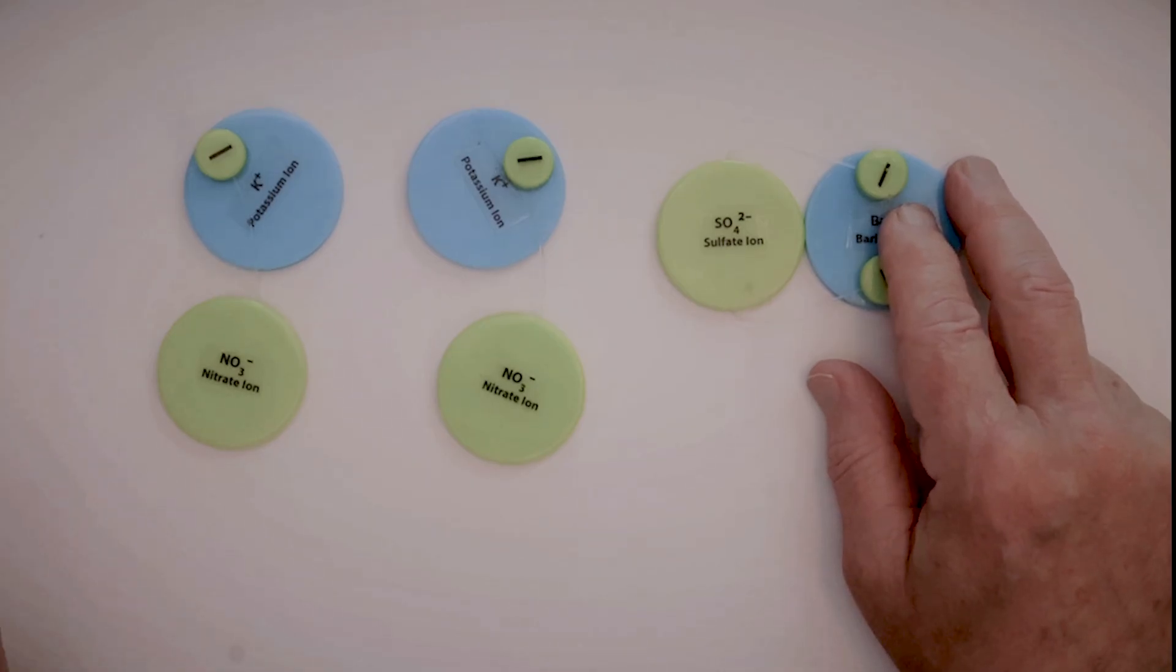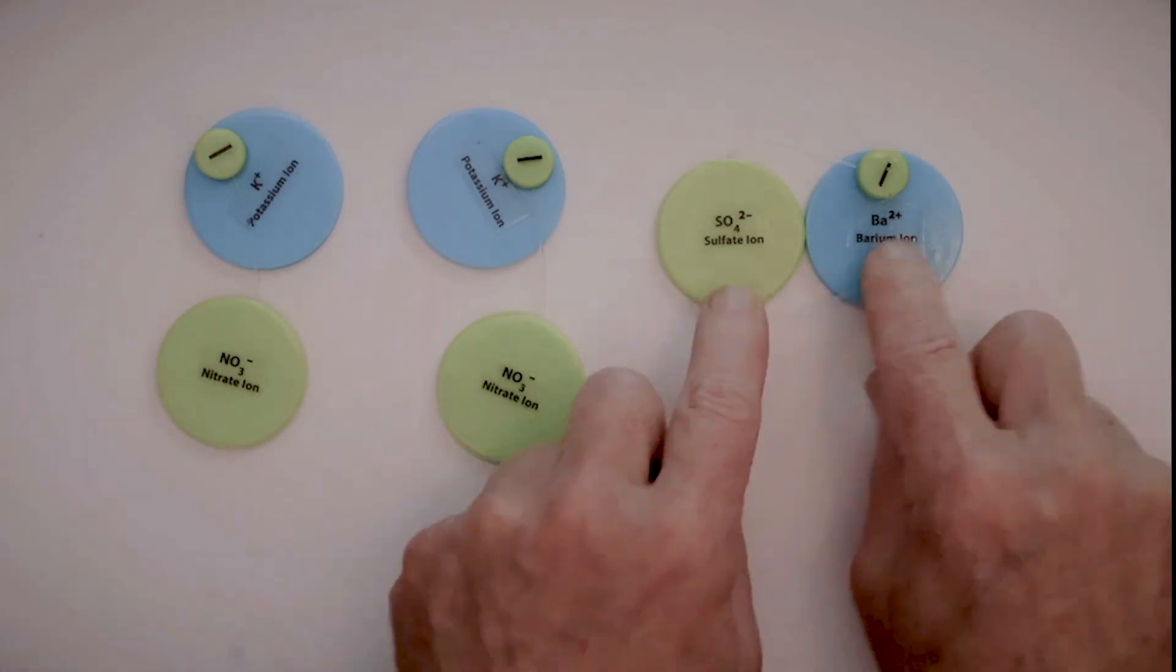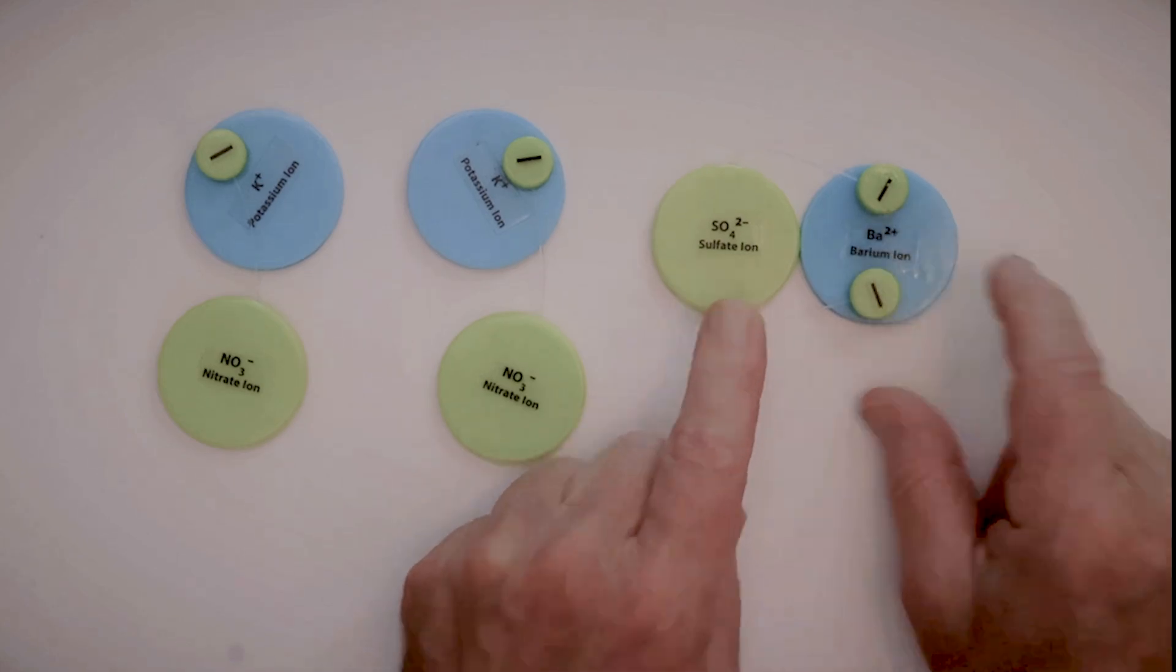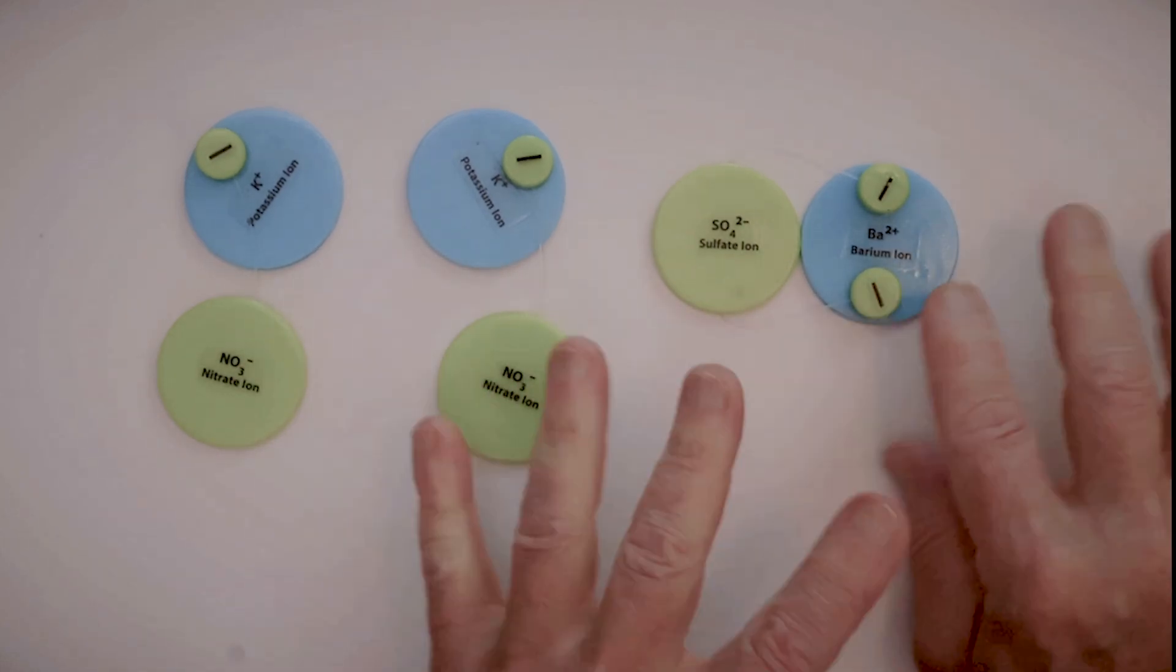Now, there's another way of looking at this, which is called the complete ionic equation. And that's the actual ions that are floating around. The barium sulfate, it's not coming apart. That's it. It's done.